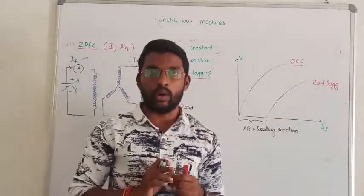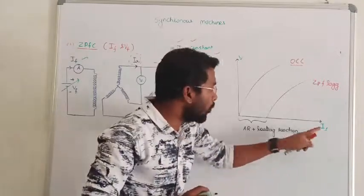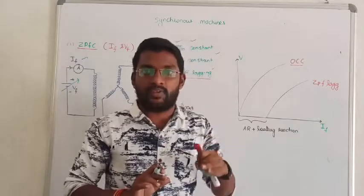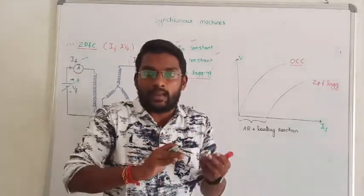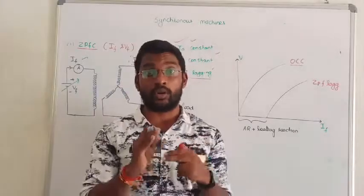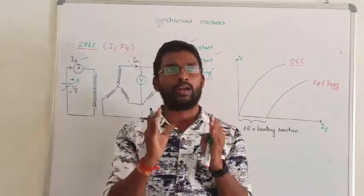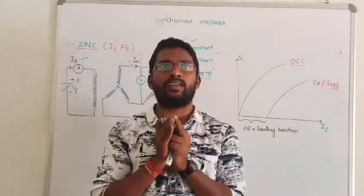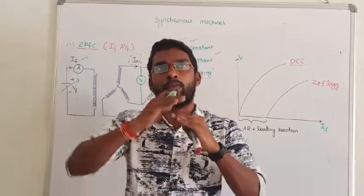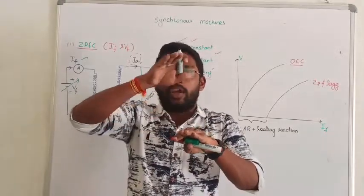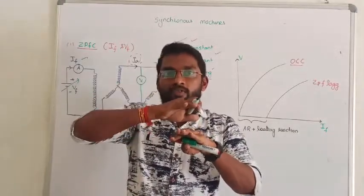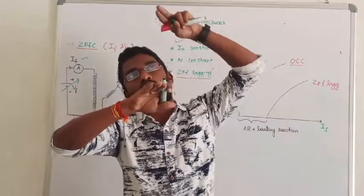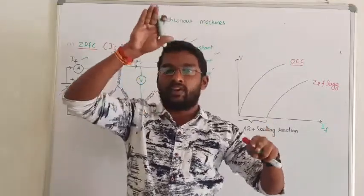In zero power factor lagging, the demagnetization effect dominates, so we need more field current — that is the first part. Second, if the demagnetization effect is present in lagging power factor, the curve is affected. In the alternator at lagging power factor, the demagnetization effect is present. If you have zero power factor lagging, demagnetization effect is maximum. If you have unity power factor lagging, the demagnetization effect is zero. If you have leading power factor, the magnetization effect is dominant.